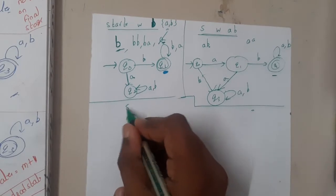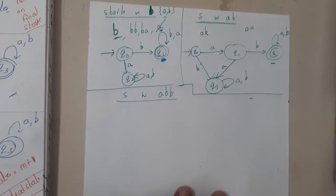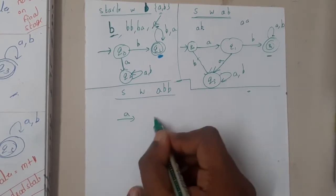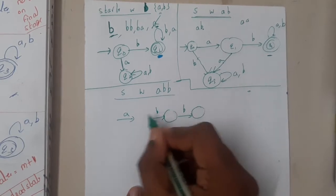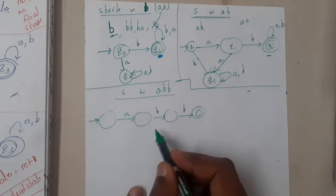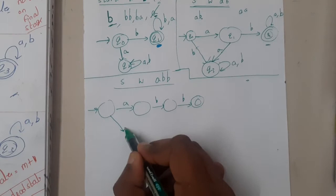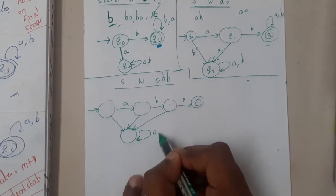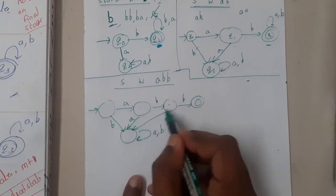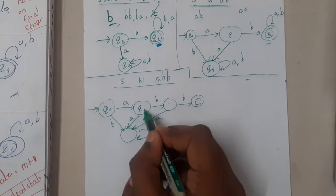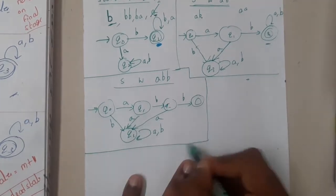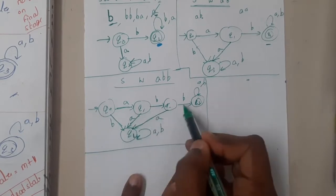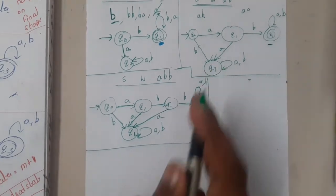Please pause the video and try to draw 'starts with abb'. From the start state, draw arrow 'a', then arrow 'b', then arrow 'b' - this is our final state. Anything in the wrong order - first 'b', double 'a', triple 'a', or 'ba' - all go to the dead state at an infinite loop. States are q0, q1, q2, q3, q4. Always check whether each node is covered with both 'a' and 'b' before finalizing the diagram.